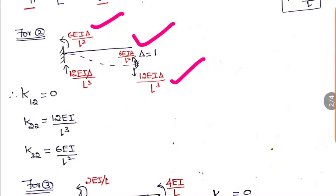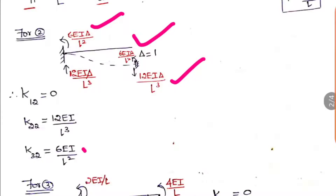For K32, the load direction is moment (rotation) and displacement is in the vertical direction. The moment at the point from the sinking support condition is 6EI·delta/L², and since delta equals 1, K32 equals 6EI/L².